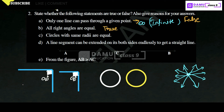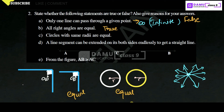Next: circles with the same radii are equal. Let's take two circles each with radius r. Since the radii are equal, the circles are also equal. This statement is true.